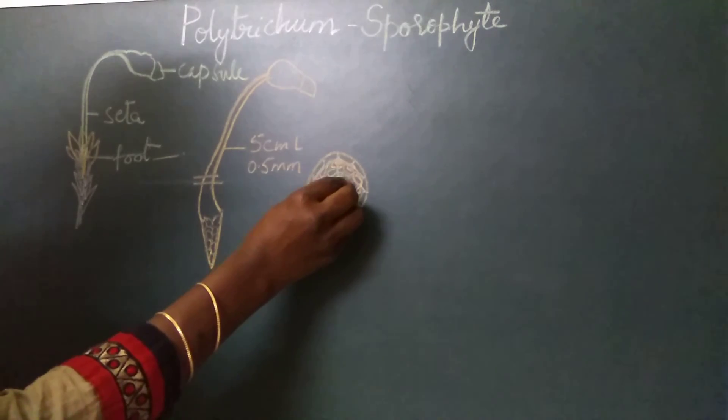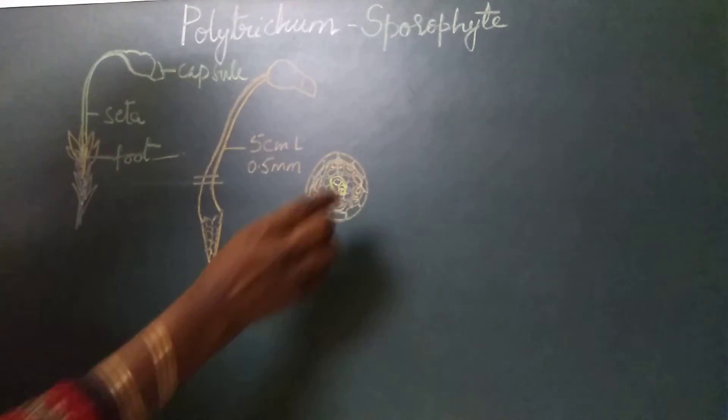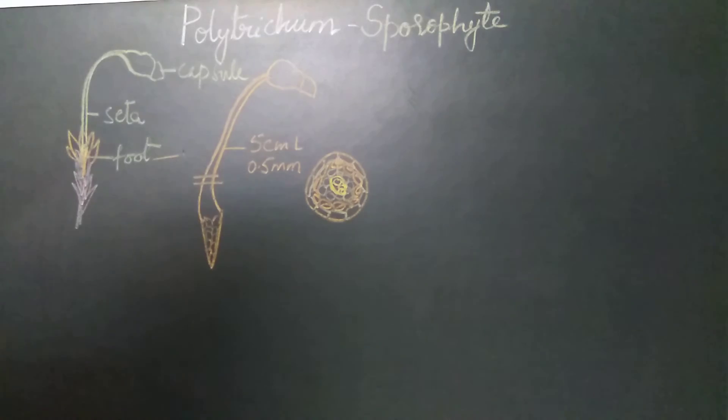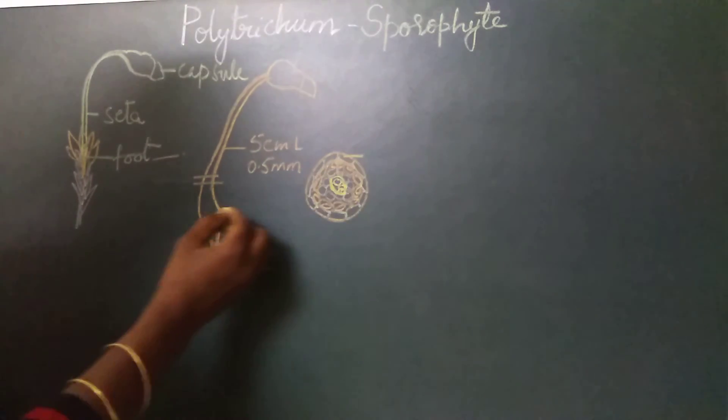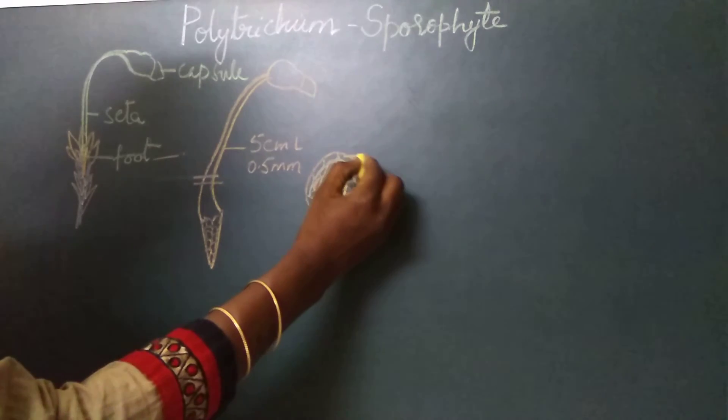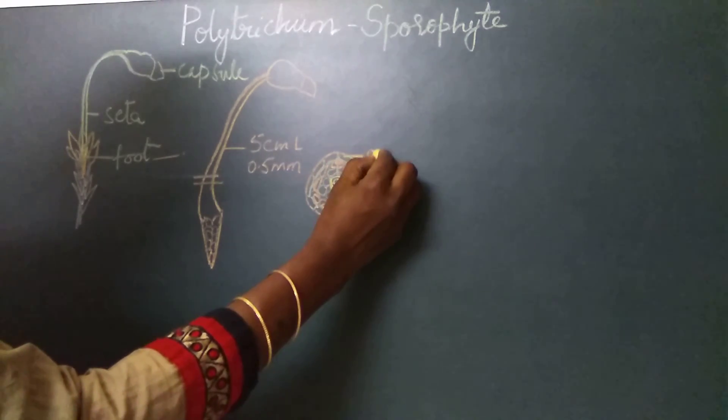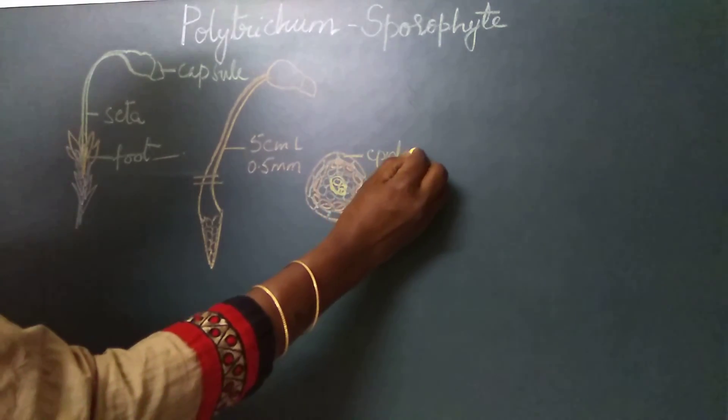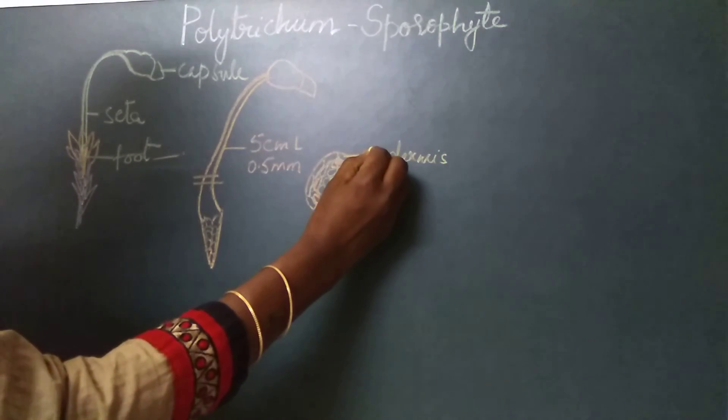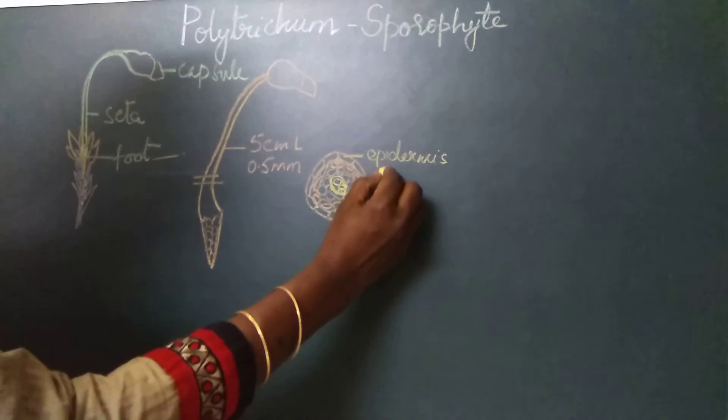The central strand is made up of cells called hydroids. So this is the transverse section of the seta where you have the outer layer called epidermis, followed by hypodermis.